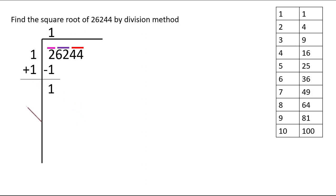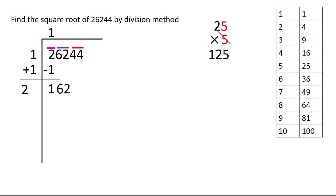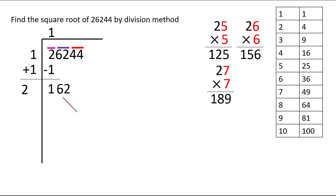Since we wrote 1 above, we add 1 below as well. 1+1 = 2. Leave enough space to write a digit. Bring 62 down. Now we need a digit after 2 such that multiplying by the same digit gives 162 or less. Trying 6: 26×6 = 156, which is still less than 162. Trying 7: 27×7 = 189, which is bigger than 162. So we settle with 26×6 = 156, and on subtraction we get a remainder of 6.